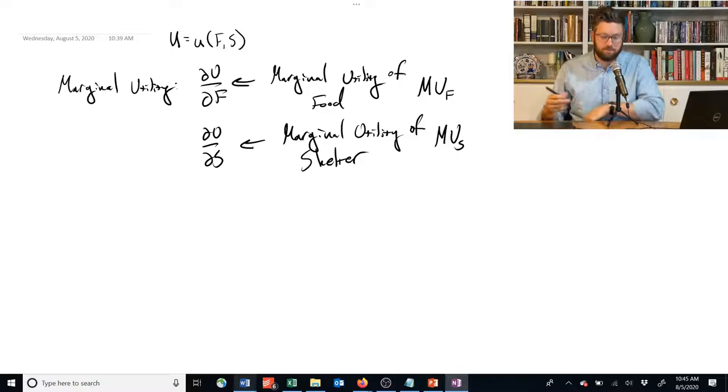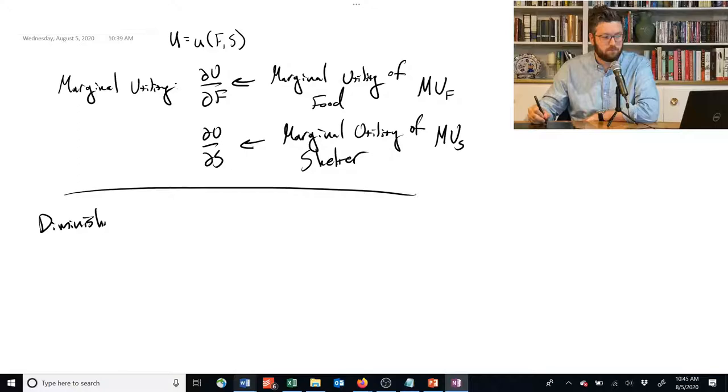And one assumption that is going to turn out to be important for some of our results is called diminishing marginal utility. This doesn't have to hold, but we tend to think it usually holds, and a lot of our results assume that it's the norm.